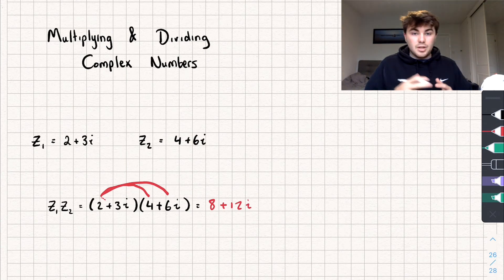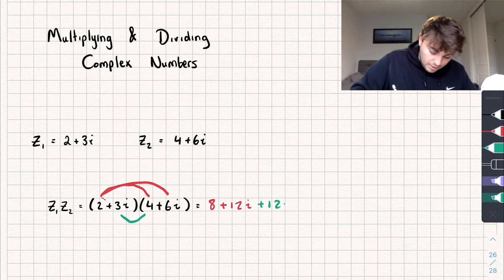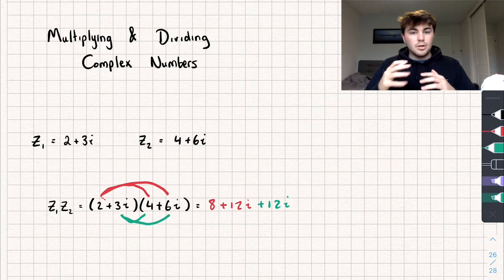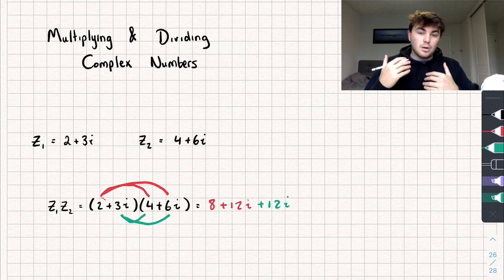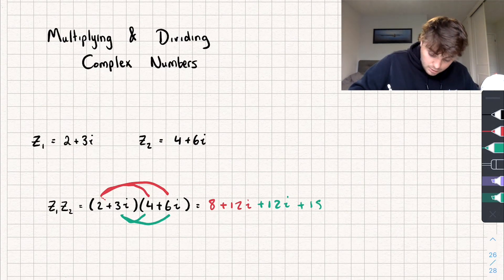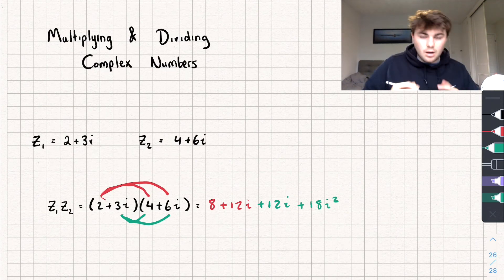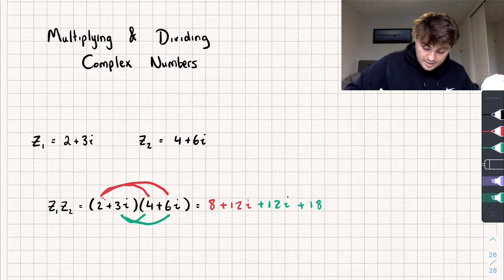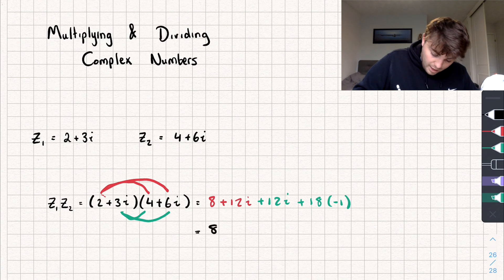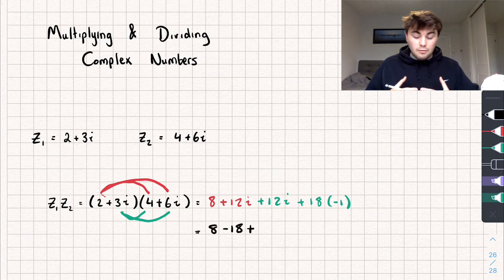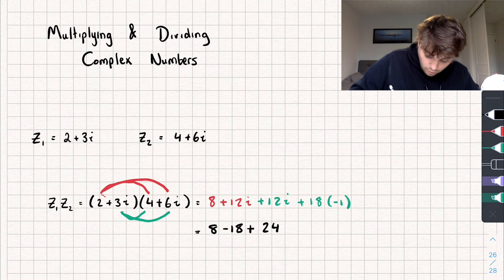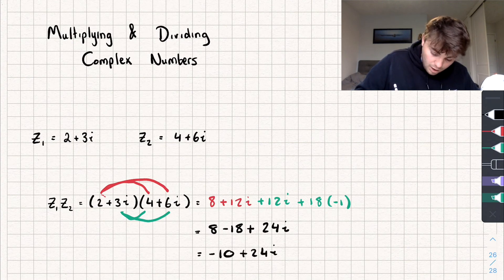Then we do the same with the other term: 3i multiplied by 4, which is plus 12i, and then 3i multiplied by 6i. This part is where people usually get a bit confused, so I'll show every step. 3i multiplied by 6i gives 18i squared, and i squared is just equal to negative 1, so we've got 18 multiplied by negative 1. Simplifying, we get 8 subtract 18, plus 12i plus 12i, which is 24i. So the answer is negative 10 plus 24i.